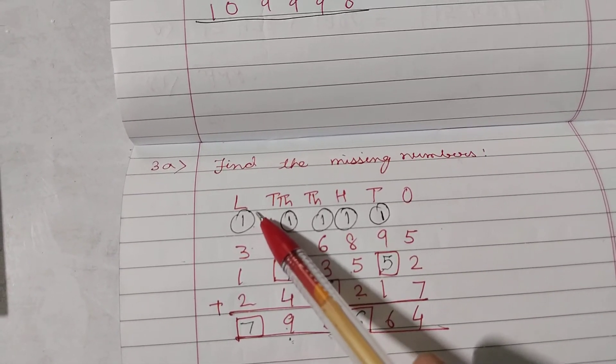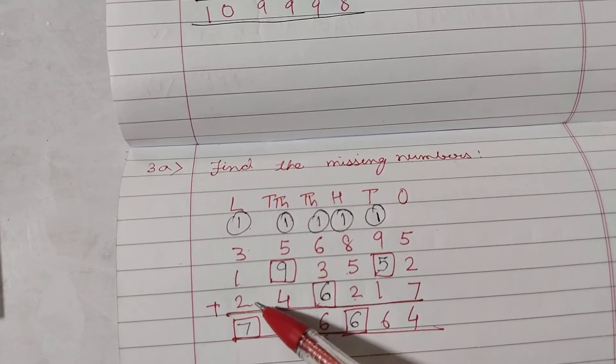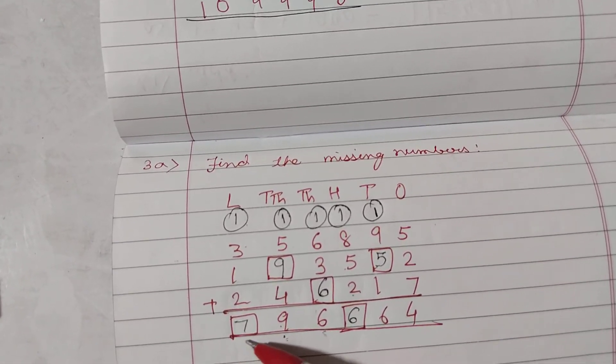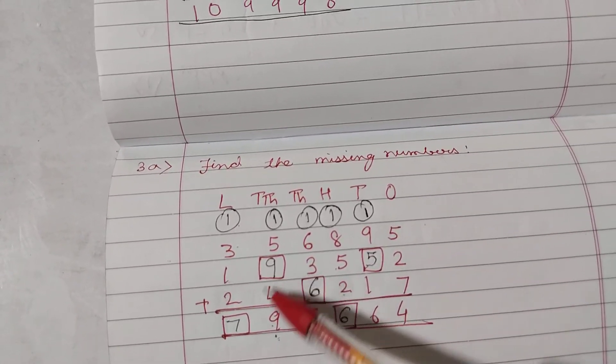Carry over 1. Now, 1 plus 3, 4. Plus 1, 5. 5 plus 2, 7. So, children, in this way, we fill the missing numbers. Okay?